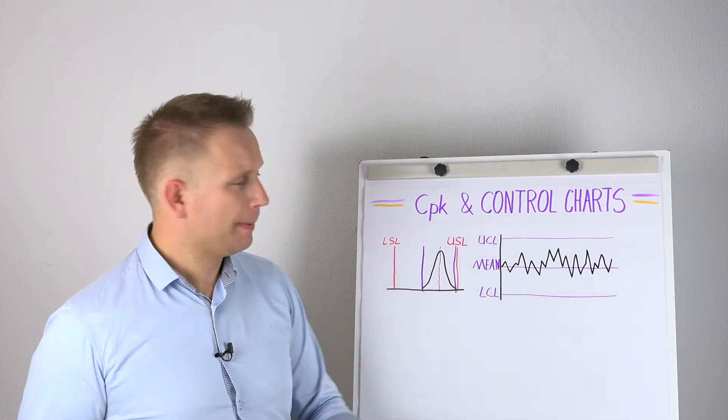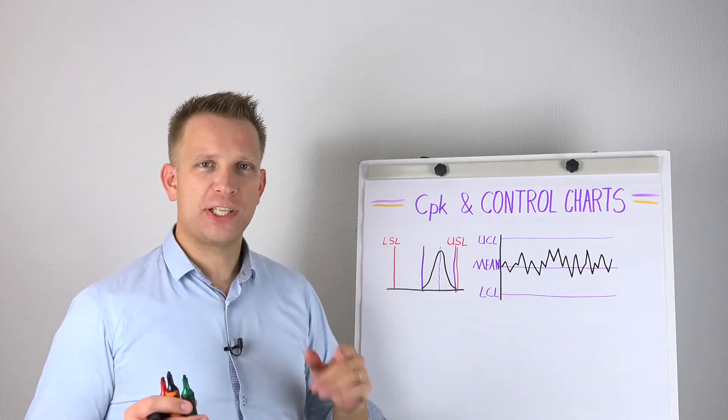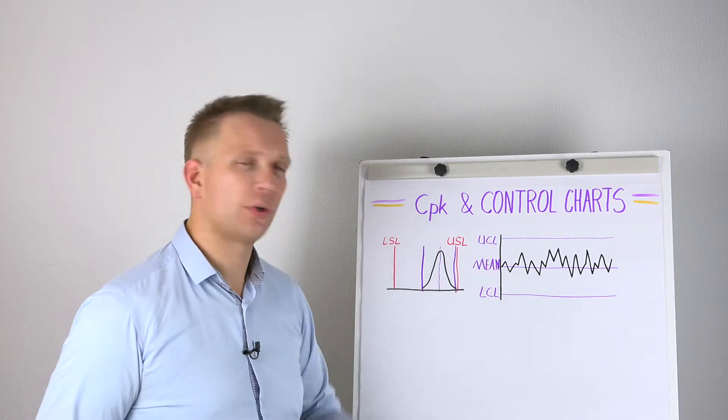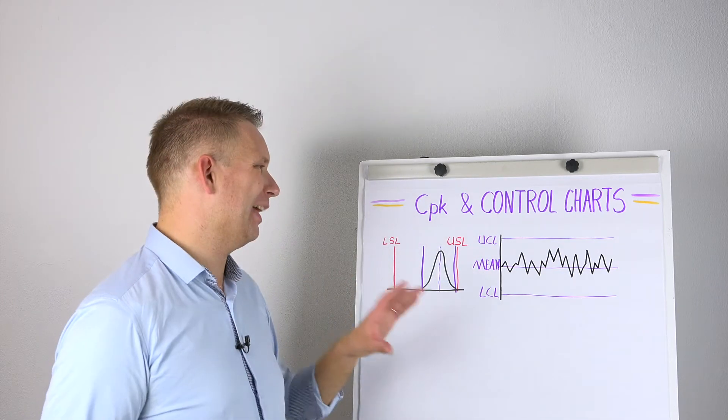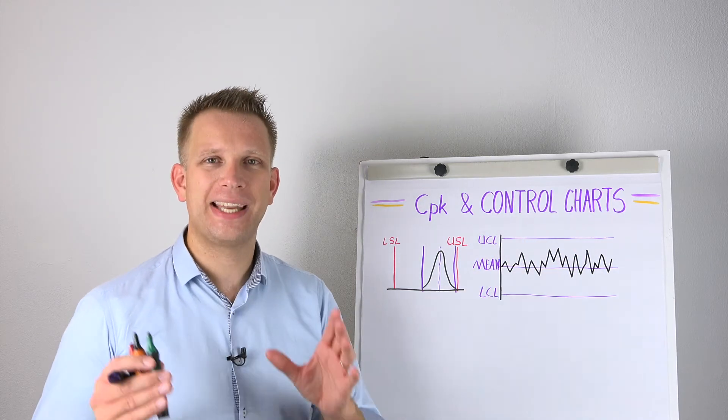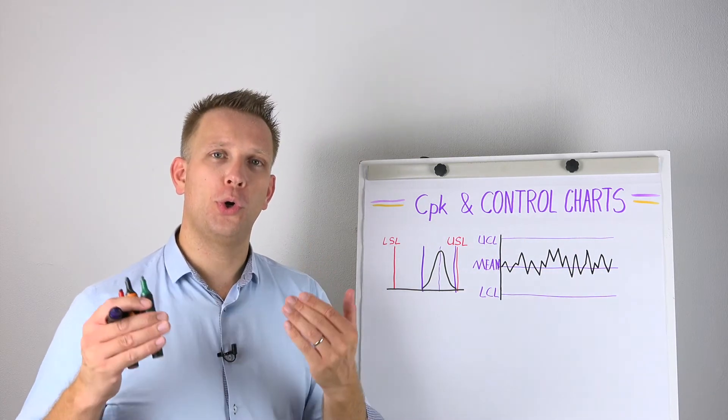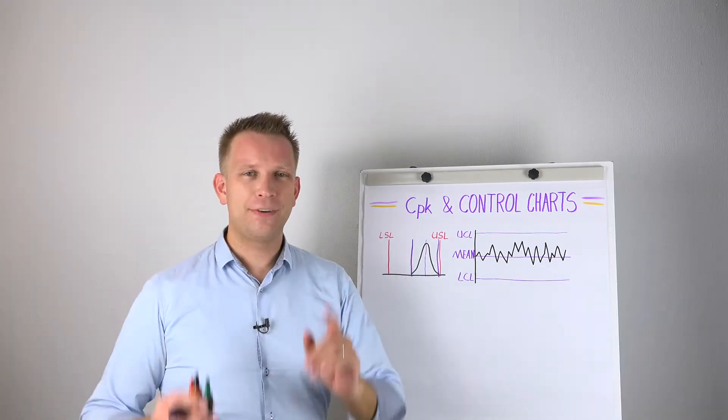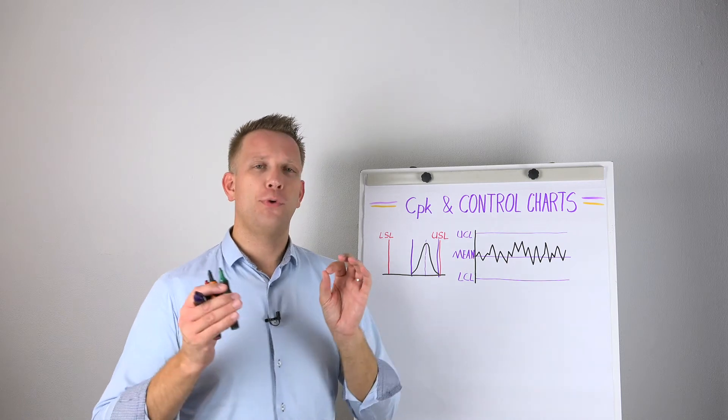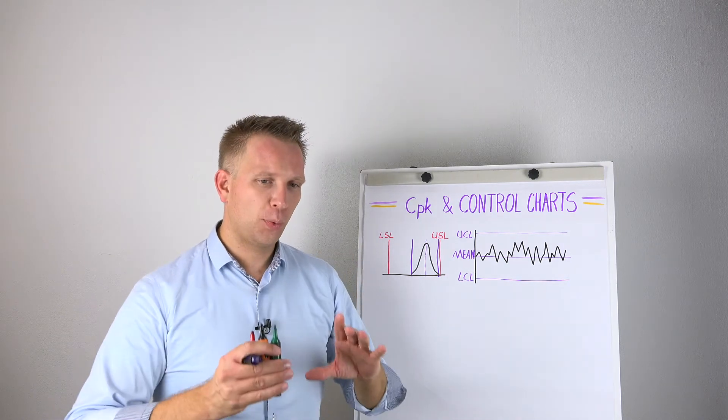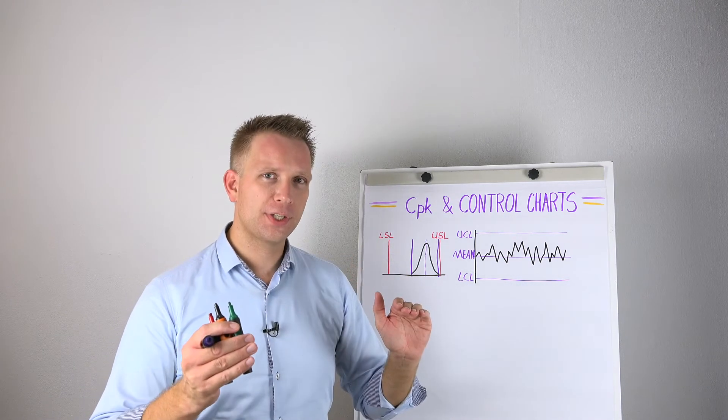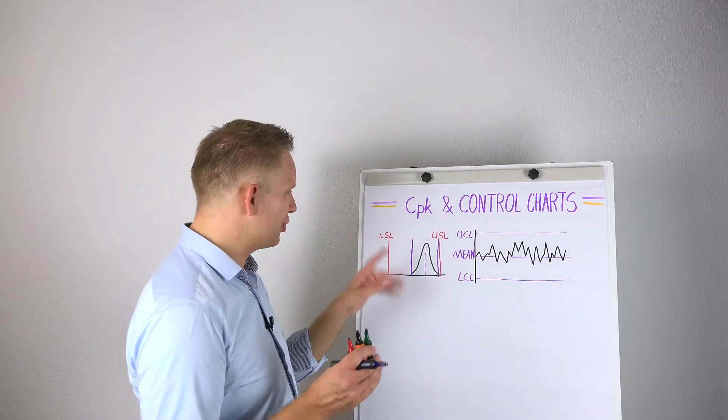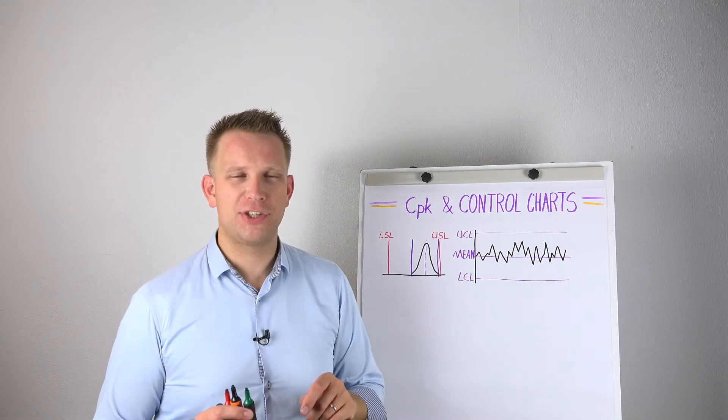Also, a tip here, never use the specification limits as your control chart limits. I would say don't even put them in there. It doesn't help you. You do not want your operators to steer on specification limits. In fact, if you have, for instance, a check weigher that weighs 100% of your packages and that one is checking lower specification limits.